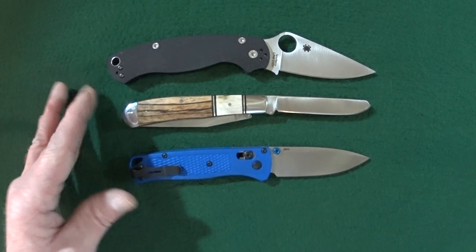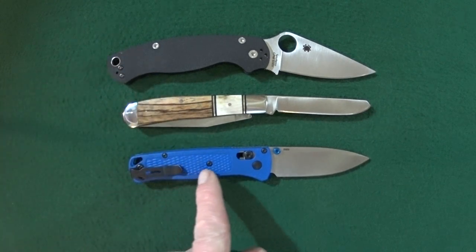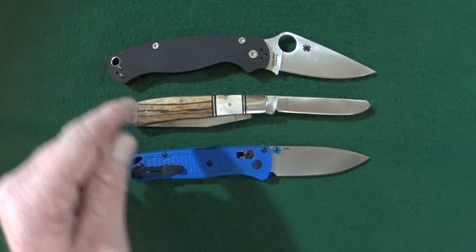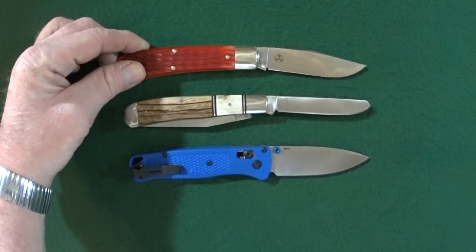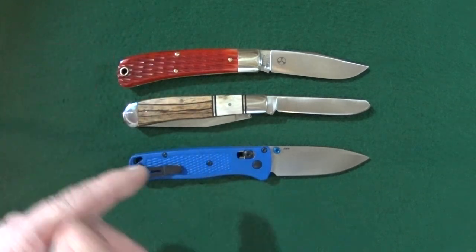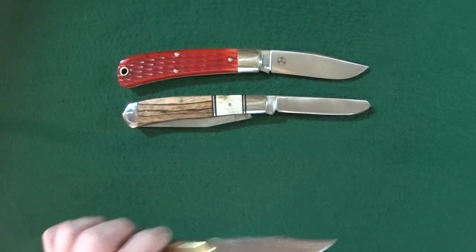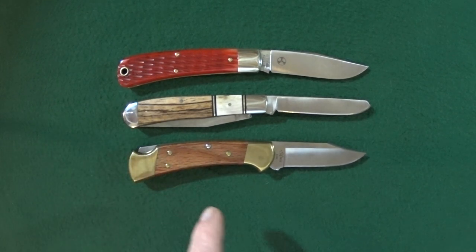Let's quickly take care of those size comparisons. On top you're looking at the Spyderco PM2, the bottom is the Benchmade Bugout, and I'm going to throw in a GEC, this is the Oregon Trapper. We're going to do one more, and that is the Buck Ranger 112.